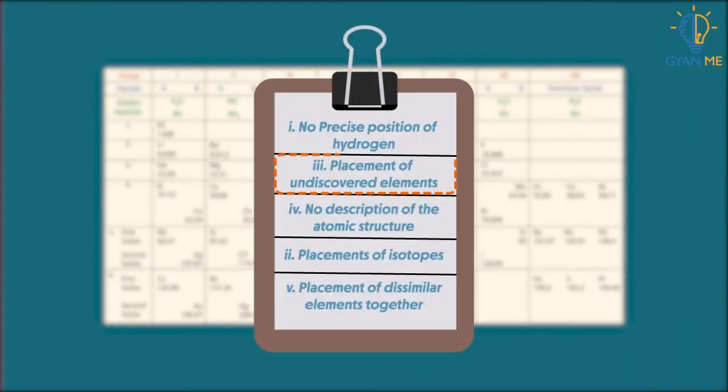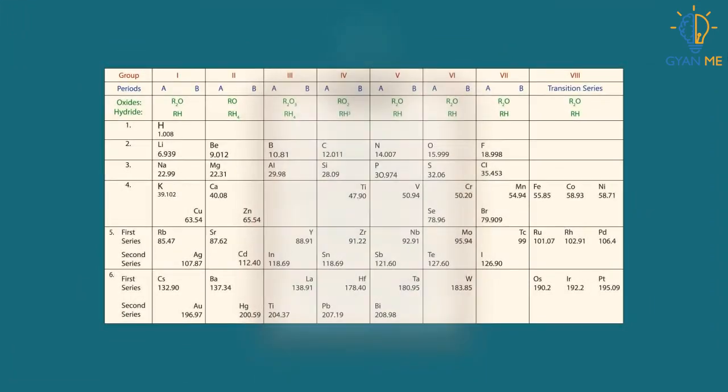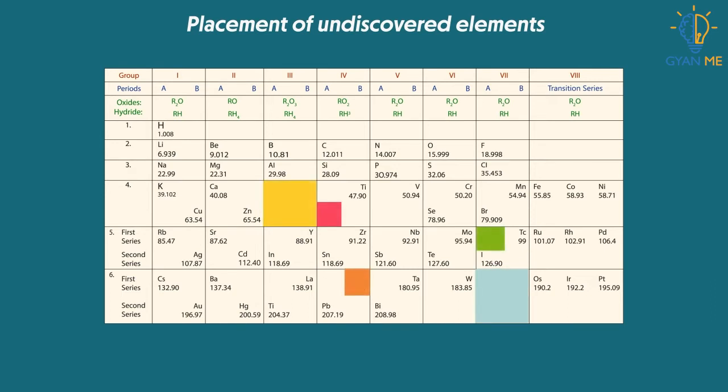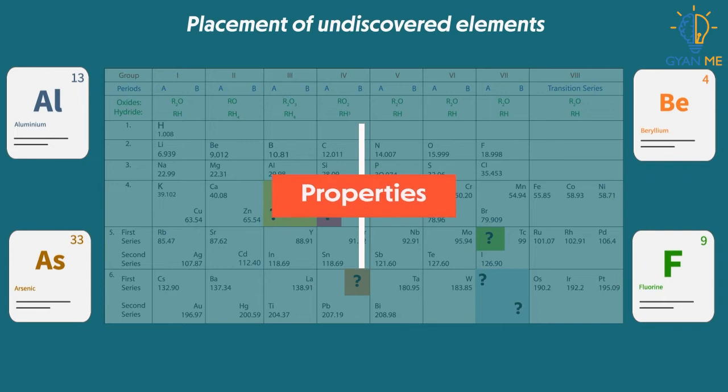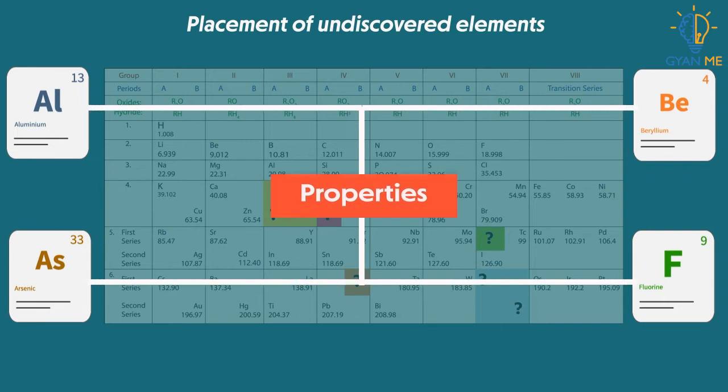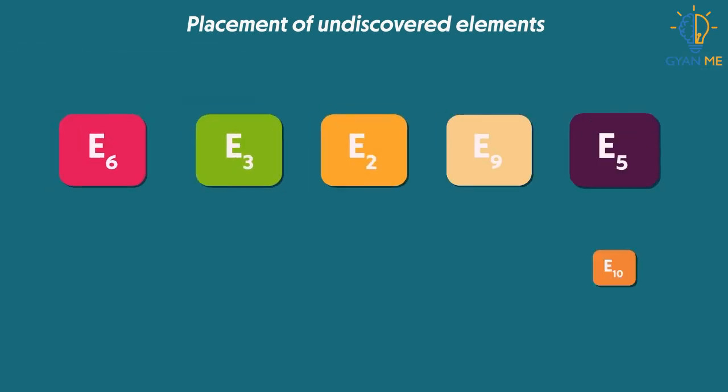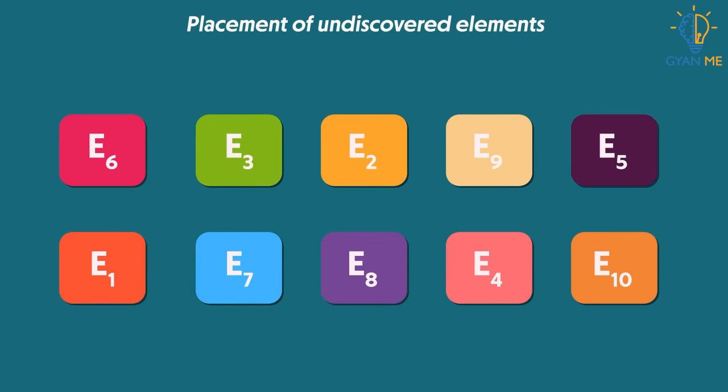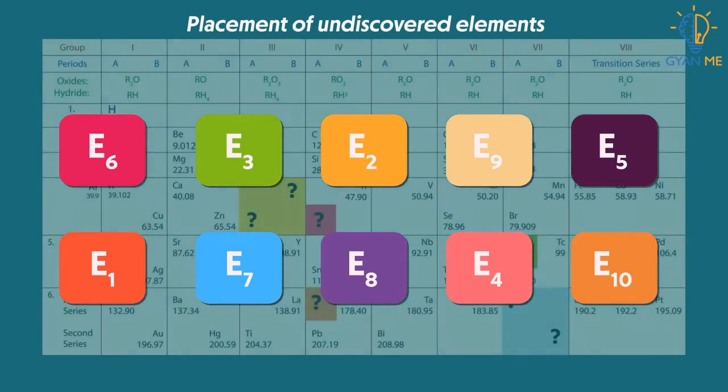Another problem was the position of undiscovered elements. Now you'll tell me, what's the problem with that? Mendeleev had already left some gaps or empty spaces for those undiscovered elements, isn't it? That's right. But his prediction was regarding the properties of elements. He never predicted how many elements would be there in between these two elements. So, what if more elements were discovered than predicted? Placing them in the table would now disturb the table. So, where do we place them then? In fact, how do we place them?